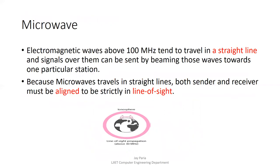Microwave signals have frequencies above 100 MHz, generally in the gigahertz range. For line-of-sight communication, the sender and receiver must be aligned. Microwaves cannot use the ionosphere for reflection because the high frequency causes signals to pass through rather than reflect back to earth.